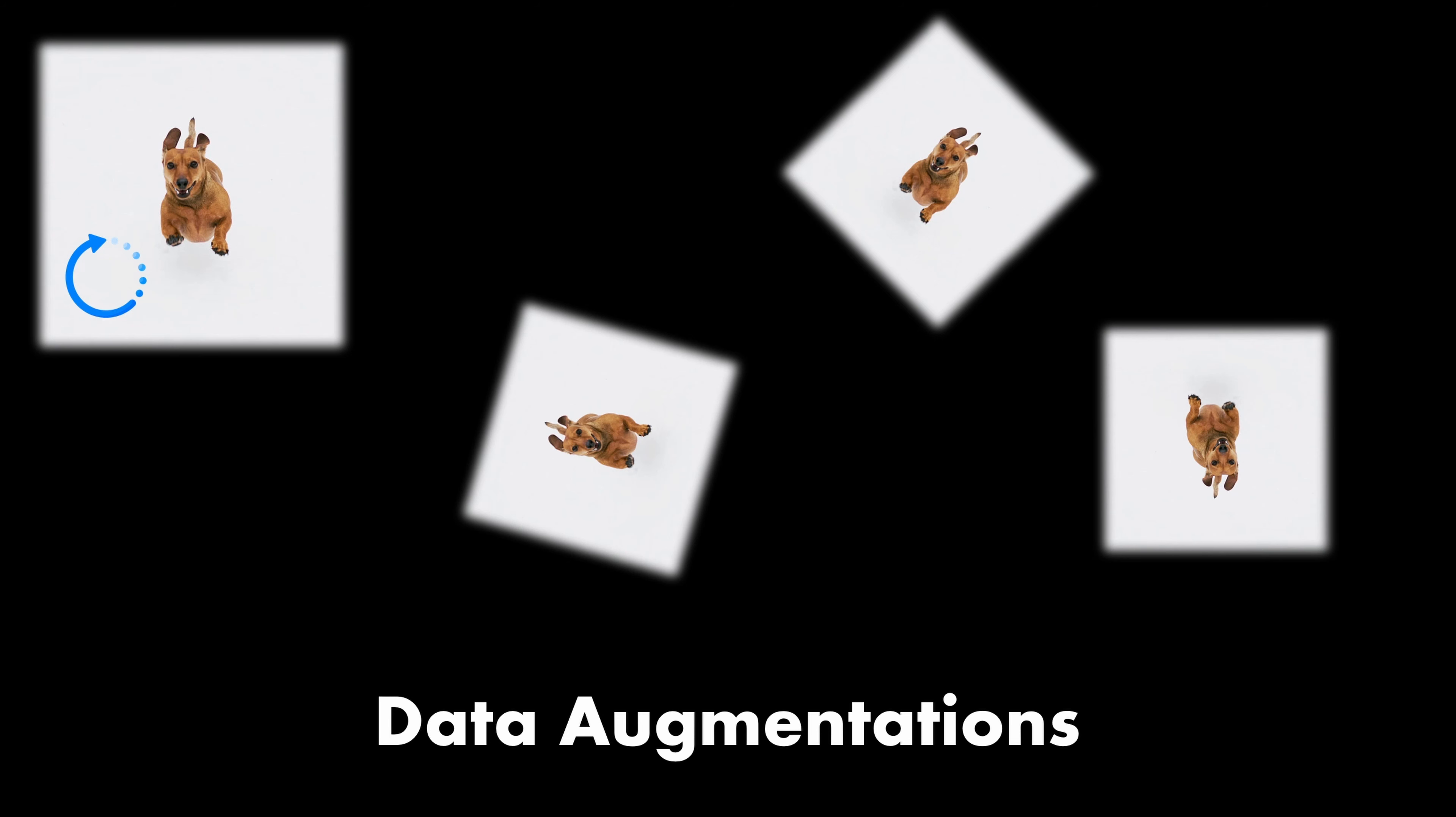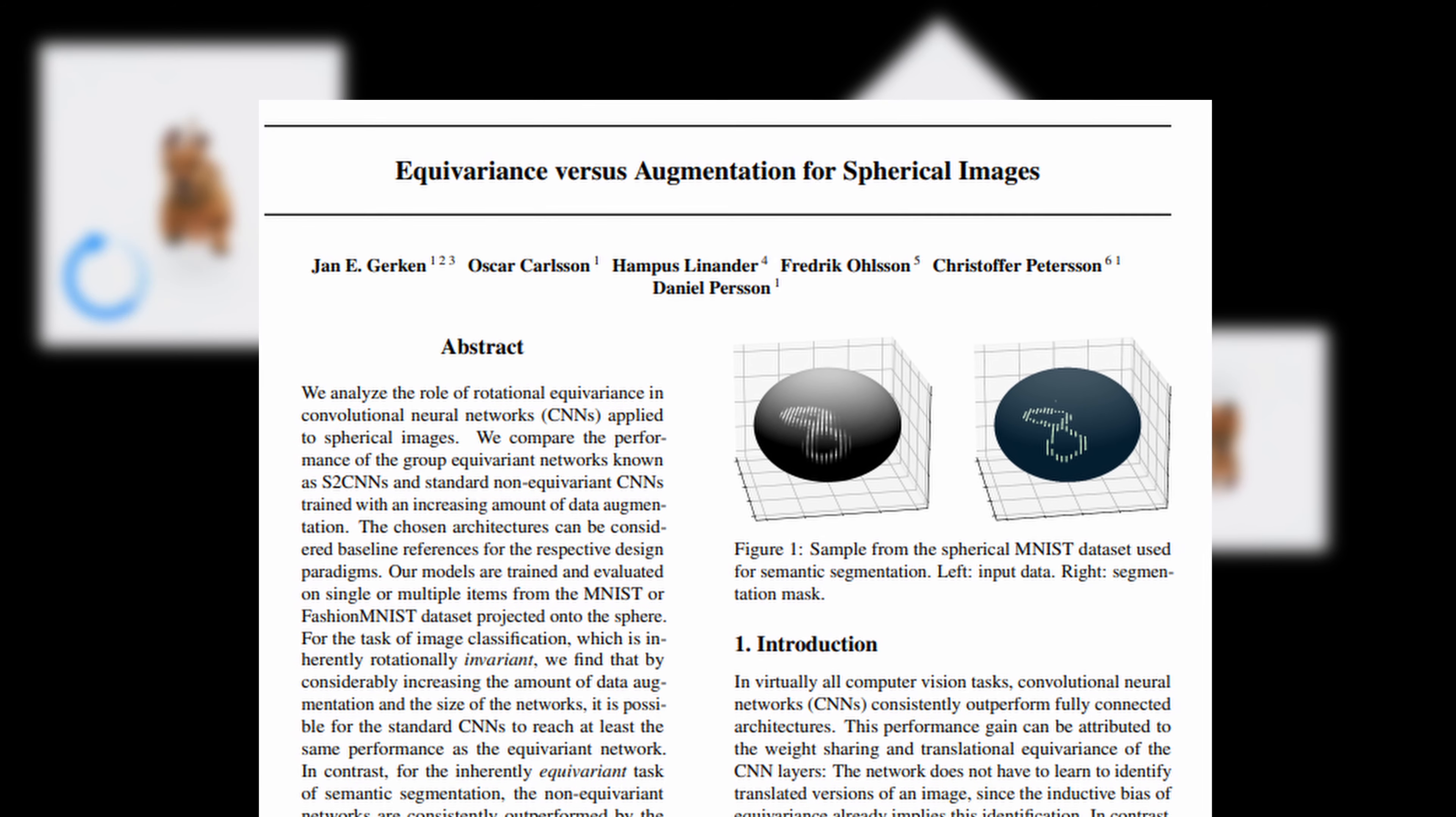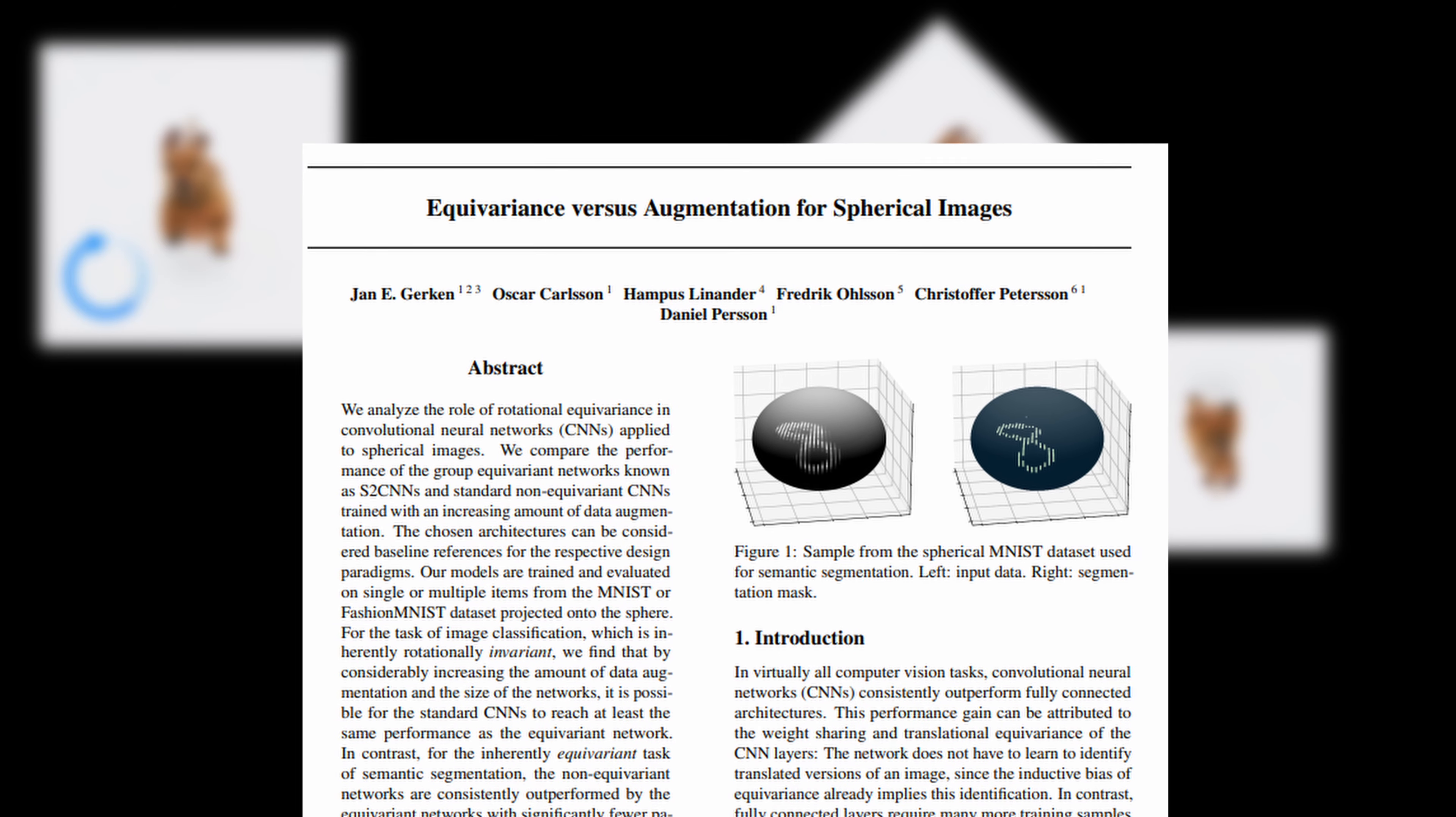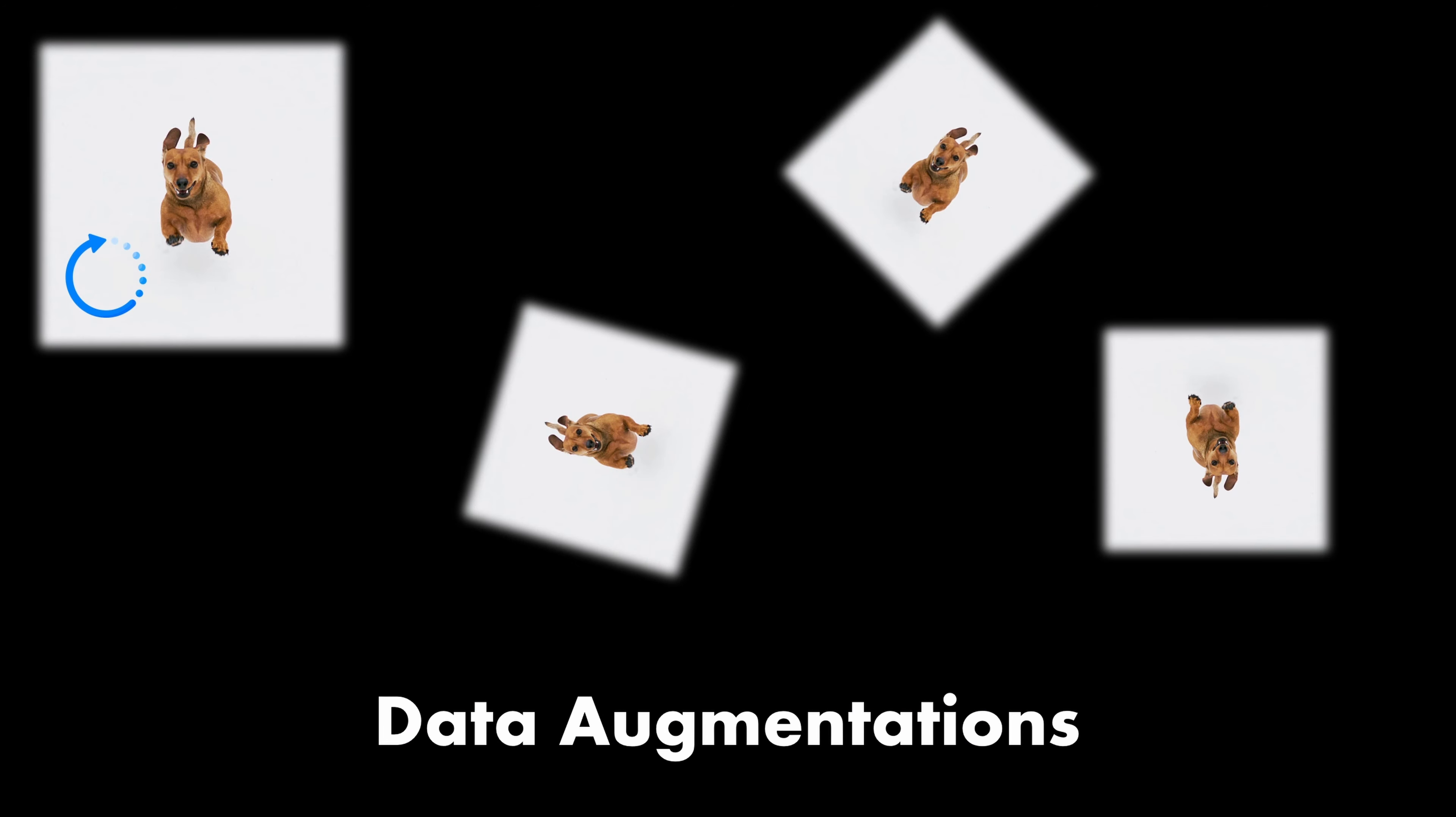But there are also downsides of data augmentation. On one hand, the performance of truly equivariant models is usually better as shown in different studies. For example, quoting this paper, our model results indicate that equivariant models possess an inherent advantage over non-equivariant ones, which cannot be overcome by data augmentation. Secondly, data augmentation is not as efficient as equivariant models and also doesn't work properly for all symmetry groups. Another common argument is that data augmentation can only be applied on the input layer, whereas with these models, we can introduce equivariance in every layer.